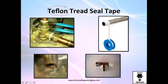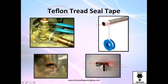Thread seal tape is essentially a Teflon material — you've probably seen it when a plumber works. You see this little white stuff wrapped around pipe threads. This is done so the fluid goes through the pipe and, because it has that packing, it won't leak. Without the white Teflon tape, fluid would start leaking at the threaded joint. This is why we use thread seal tape.